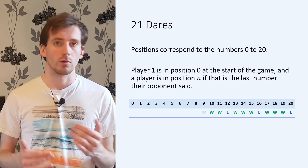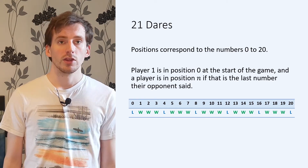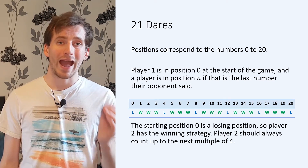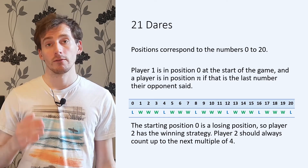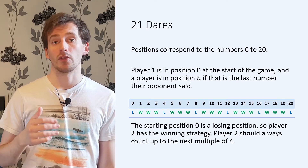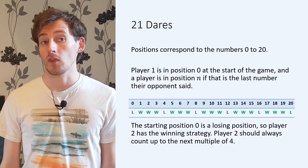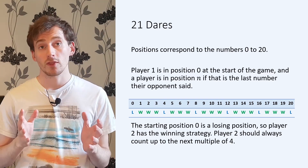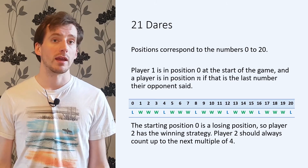Hopefully you can see that this pattern will continue, so we can label all of the positions as either winning or losing. Doing this, you can see that the starting position — position zero — is a losing position. This means that player two has the winning strategy. Whatever player one does, player two should count up to the next losing position: 4, 8, 12, 16 or 20. On player one's first turn they must count to either 1, 2 or 3, and then player two can count to 4. On player one's second turn they must count to 5, 6 or 7, and then player two can count up to 8, and so on. Notice that player two just has to aim for the multiples of 4 — 4 being one more than 3, which is how much the players can count each turn.